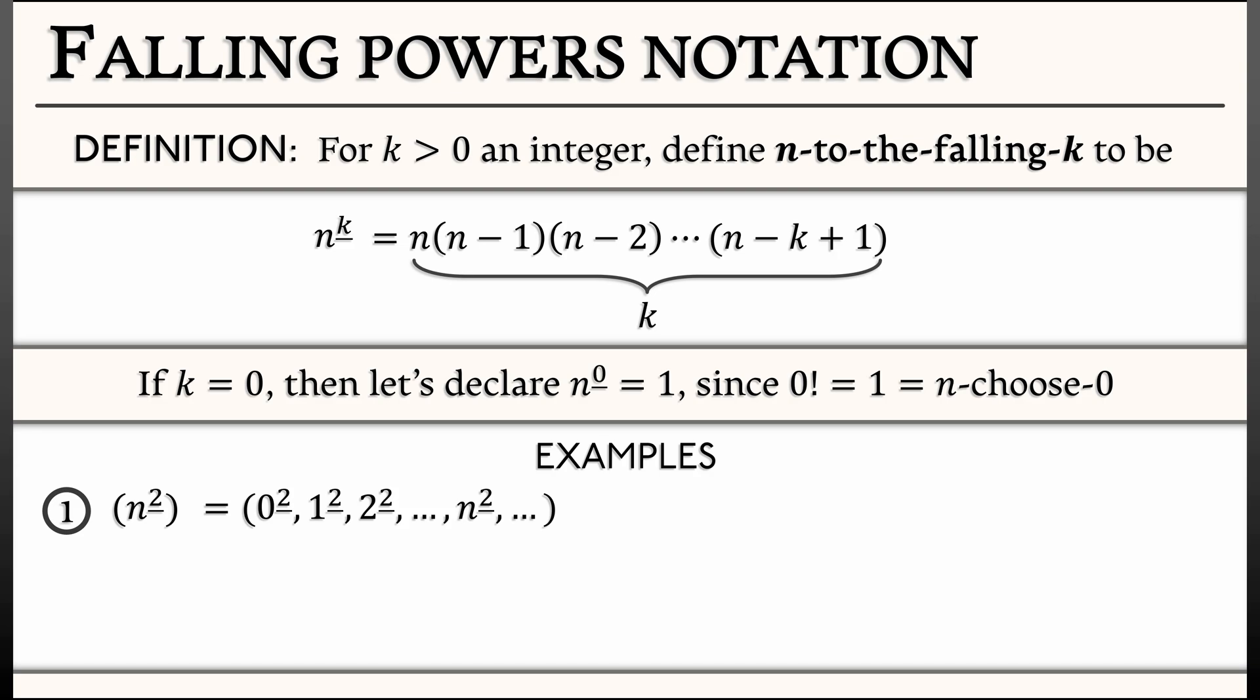If you work out what those numerical values are, 0 to the falling 2 is going to be just 0. It's 0 times negative 1, and 1 to the falling 2 is going to be 1 times 0. That's also 0. 2 to the falling 2 is 2 times 1. That's going to be non-zero. That's 2. And then you could keep going. You get 6, 12, 20. The nth term in that sequence is n times n minus 1.